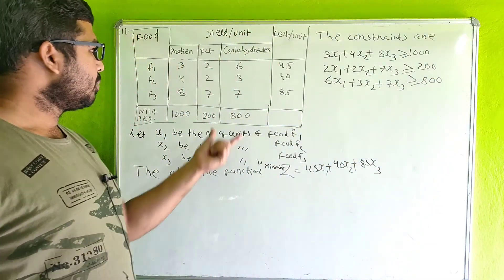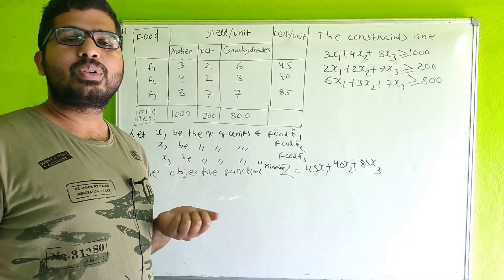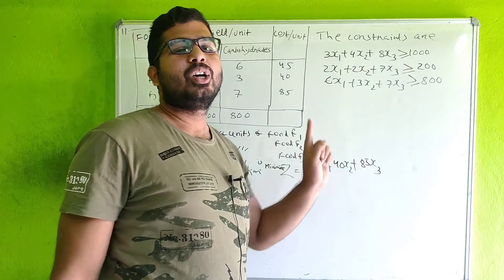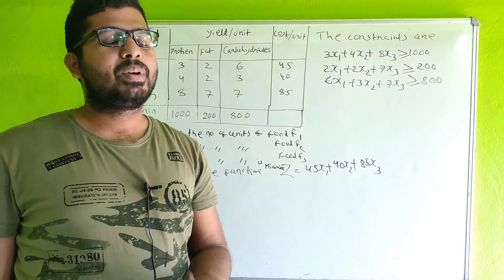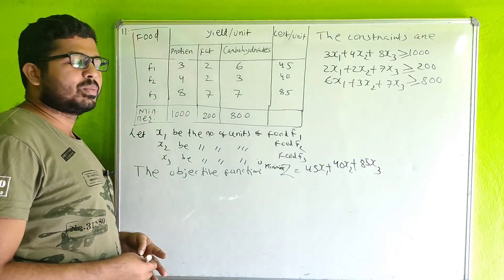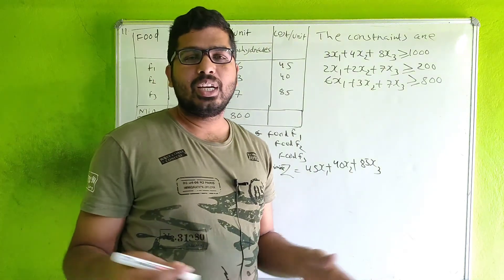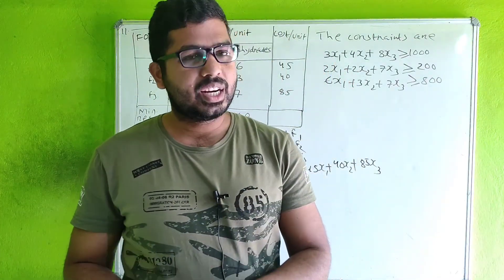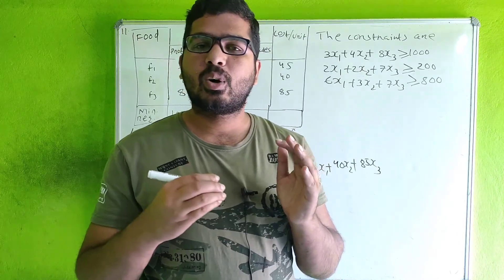Do you understand? The minimum carbohydrate requirement is 800 units. This is the constraint and this is our objective function. You can easily formulate LPP. This is question number 11. Now we will complete exercise 3A in the second video. Please watch the whole video without skipping for the complete concept.